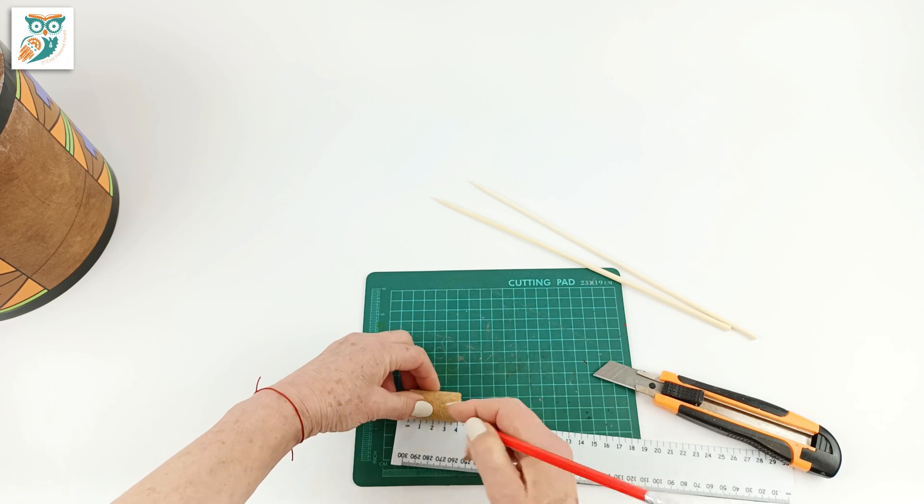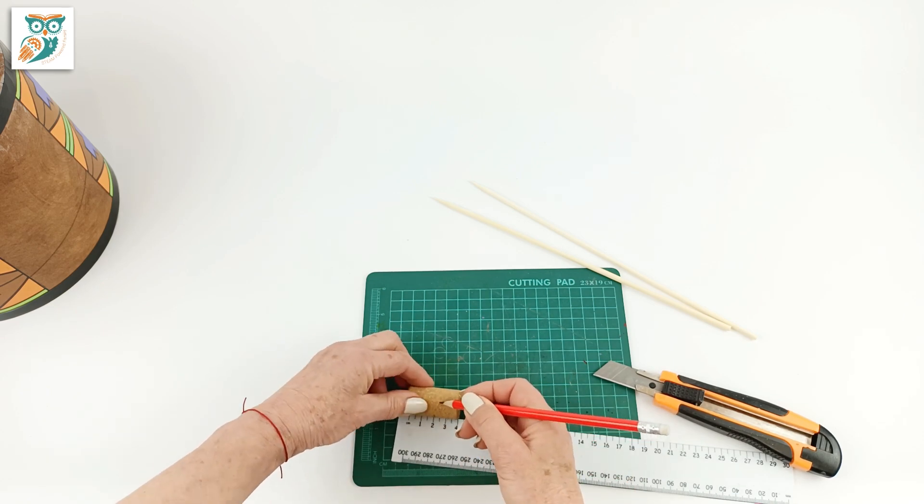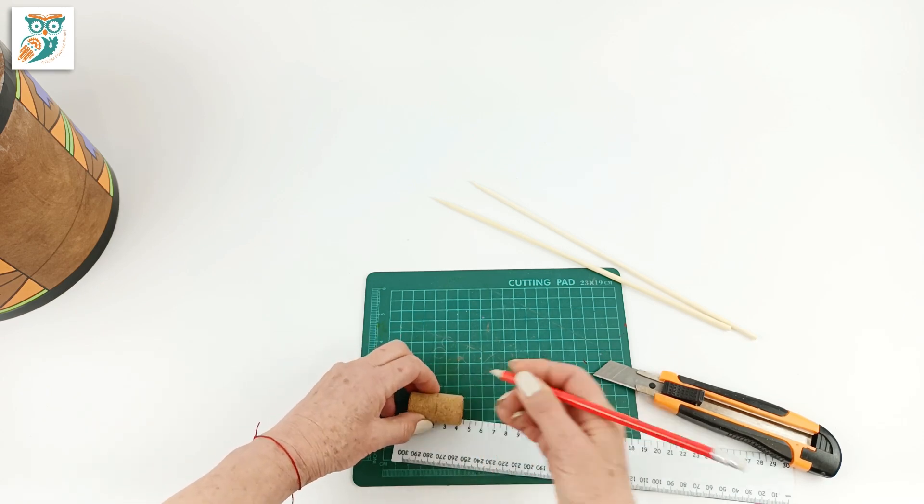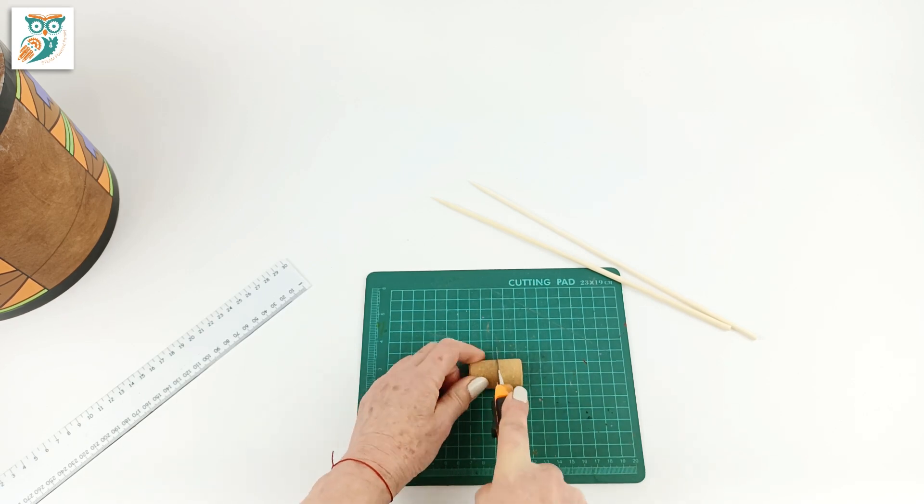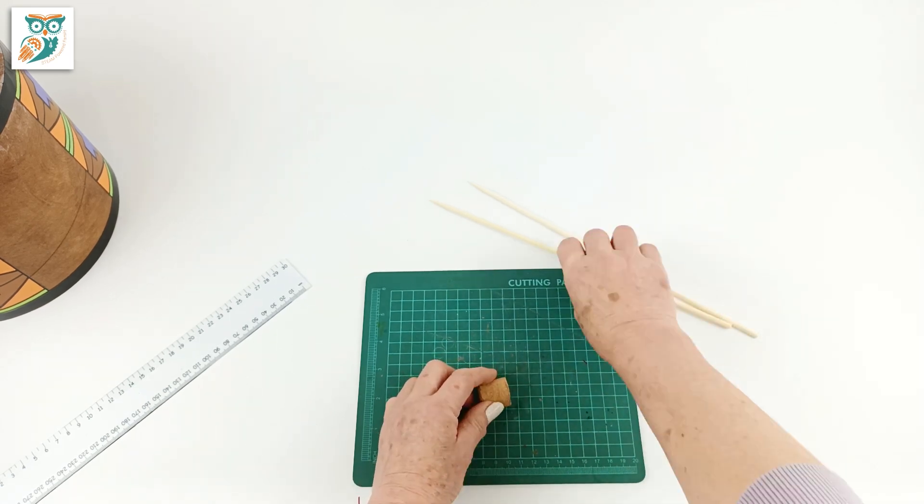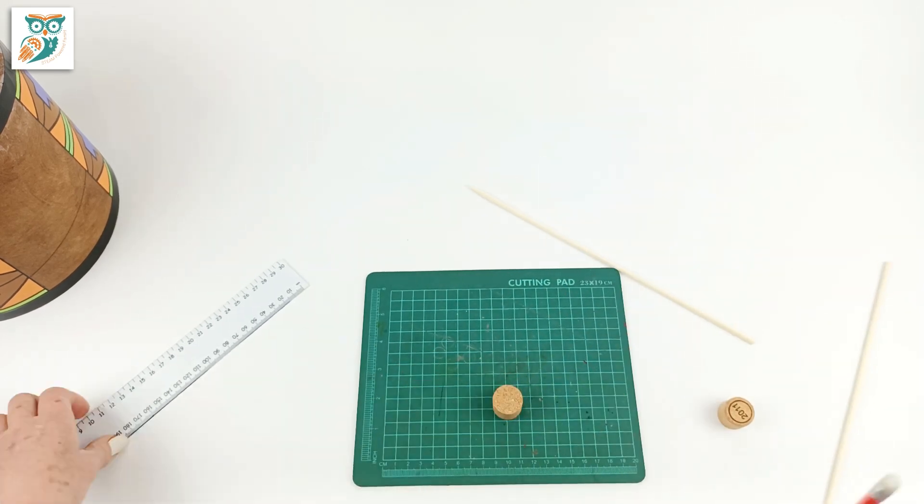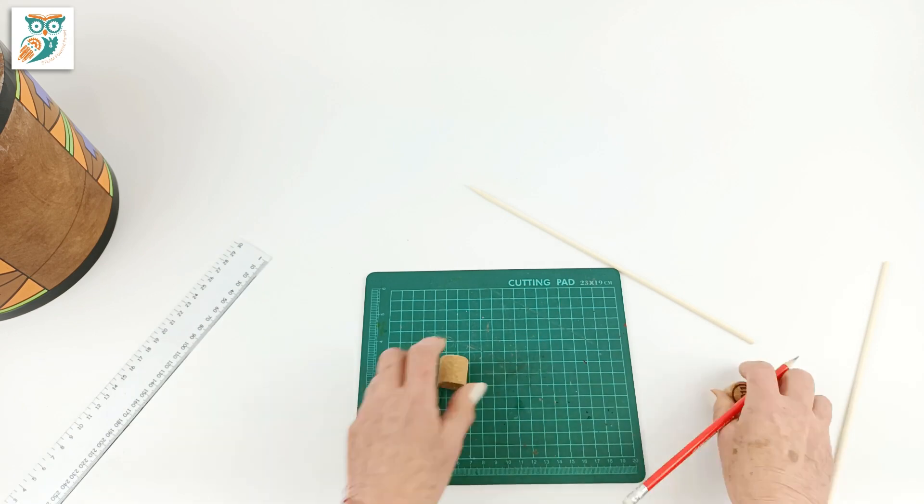Now we're going to make our drumsticks. The first step is to take a wine cork and cut it in half. I highly recommend that an adult does this step as the knife is very sharp and the cork does roll around a lot. However, if you do have older kids that are responsible, they could definitely do this step with adult supervision.